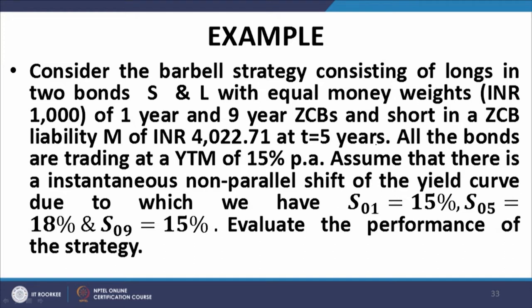This is the constitution of the barbell and we have a short body. The short body is a zero coupon bond that is a liability M of INR 4022.71 at t equal to five years. All the bonds are trading at a YTM of 15 percent per annum.